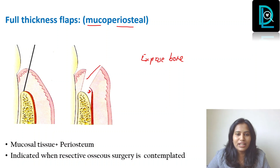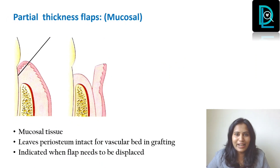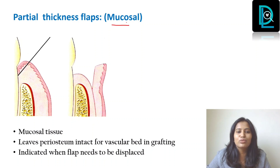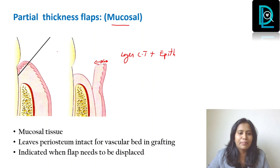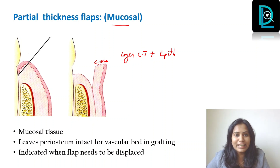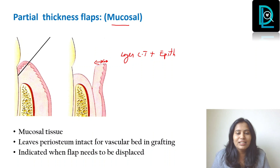This is how the mucoperiosteal flap is raised — the entire mucosa plus connective tissue plus periosteum is reflected. Now the next one is your partial thickness flap or mucosal flap. As the name suggests, you do not include your periosteum. It is just the epithelium plus a layer of connective tissue. Whenever you need the vascular bed for any grafting purposes, this is the flap you use. Also when you need to displace the flap — apically, coronally, or laterally depending on the objective — you use the partial thickness flap.